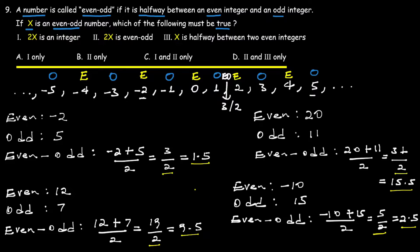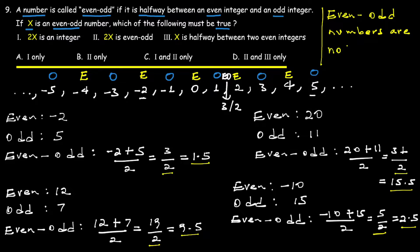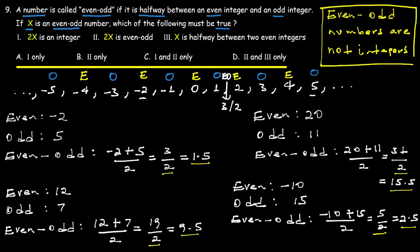Integers do not include fractions and decimals. Even-odd numbers, by their definition, always fall between an even and odd integer, resulting in a half-integer value. Therefore, even-odd numbers are not integers. This is an important conclusion.